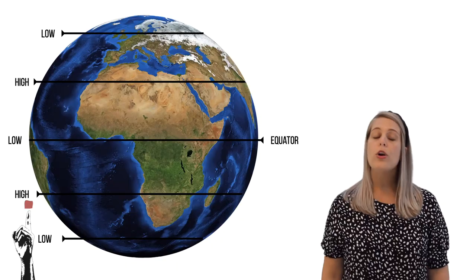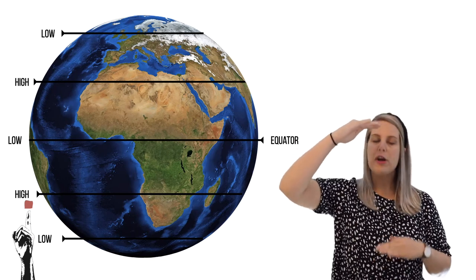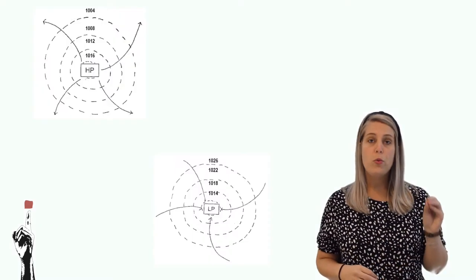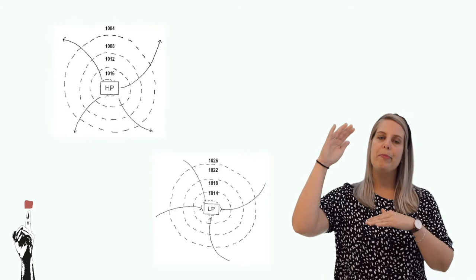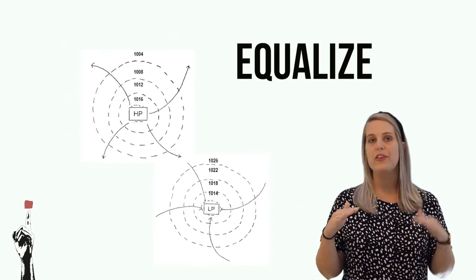Many people think that wind is a result of the earth turning on its axis. If this were the case it would mean that it would be windy 24 hours a day because the earth is constantly rotating. All along the earth, from the equator to the poles, there are different pressure belts ranging from high pressures to low pressures. Wind is air that is moving from a high pressure to a low pressure in order to try and equalize and balance out the different pressures.